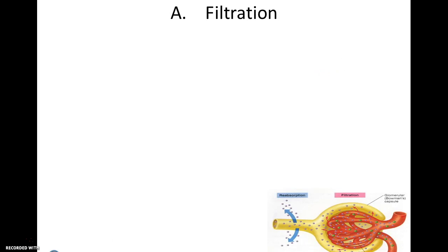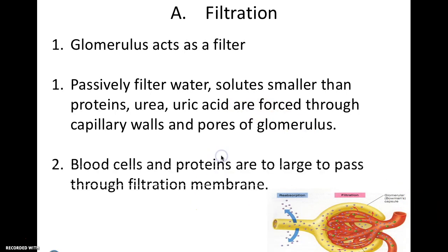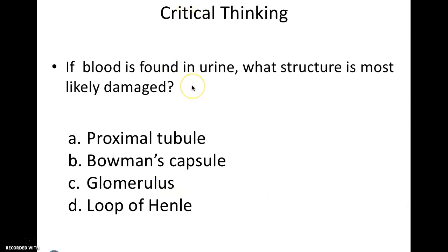Filtration occurs in the glomerulus where Bowman's capsule is. The glomerulus acts as a filter — it passively filters water and solutes smaller than proteins. Urea and uric acid are forced through capillary walls and pores of the glomerulus by blood pressure, with no active transport or ATP needed. Blood cells and proteins are too large to pass through the filtration membrane, so you should not see blood or proteins in your urine. If you do, that could be a sign of damage to the glomerulus.